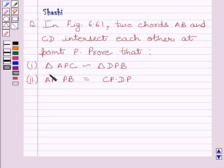Prove that triangle APC is similar to triangle DPB, and AP multiplied by PB is equal to CP multiplied by DP.